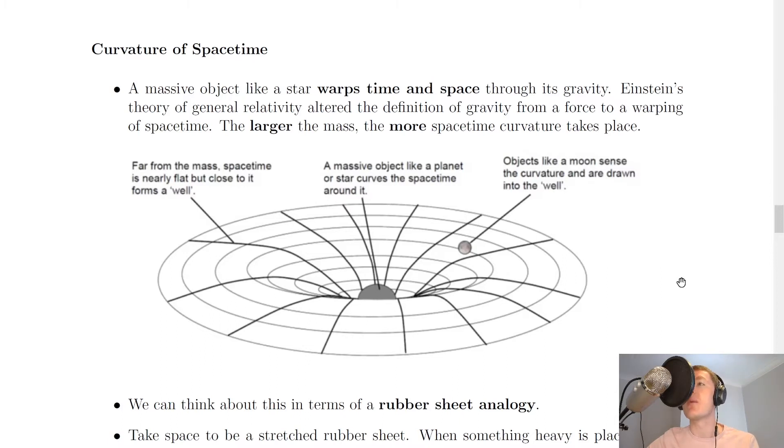Now we've already seen that because of the equivalence principle, gravity will affect time and space. And a consequence of this is the curvature of space-time. So it says here that a massive object like a star warps time and space through its gravity. Einstein's theory of general relativity altered the definition of gravity from a force to a warping of space-time. So the larger the mass, the more space-time curvature takes place.